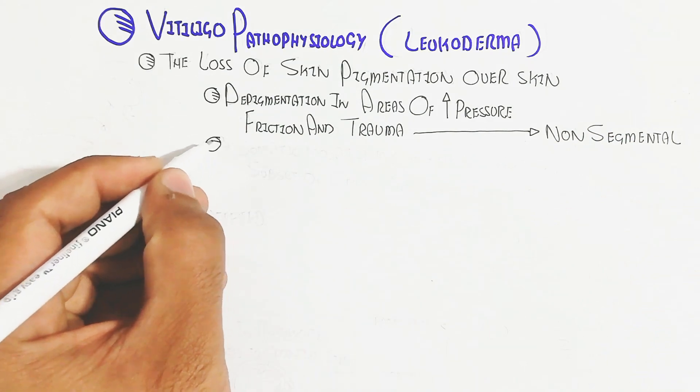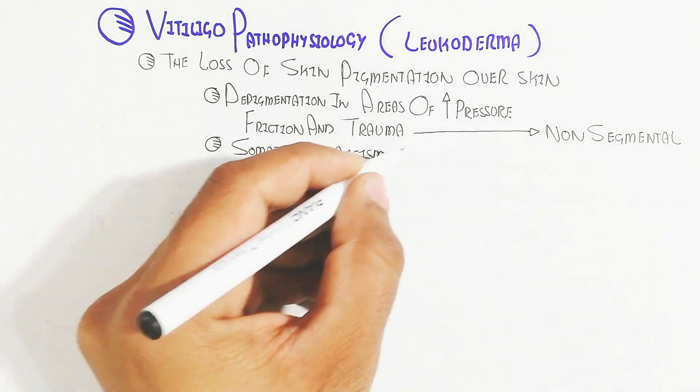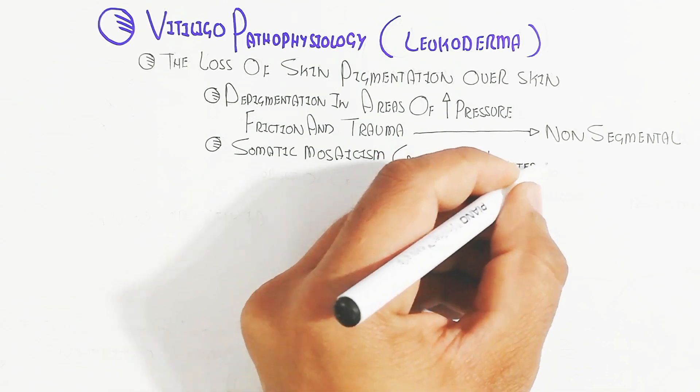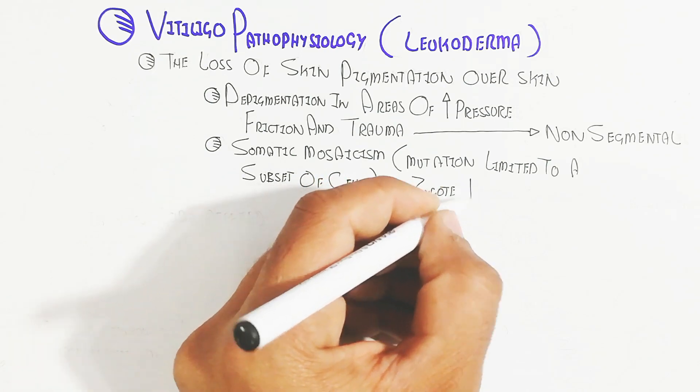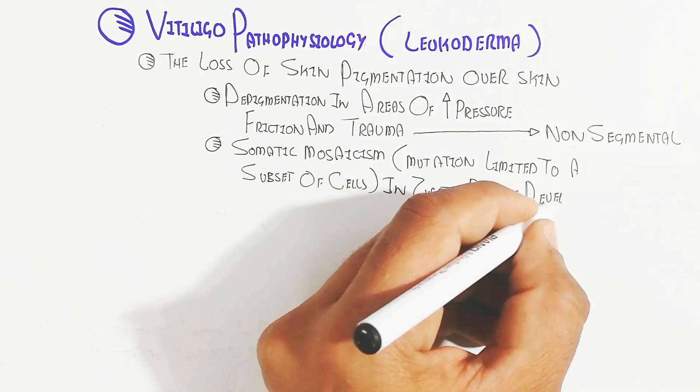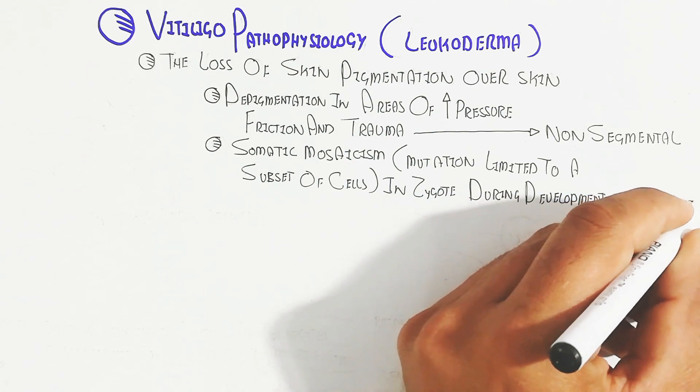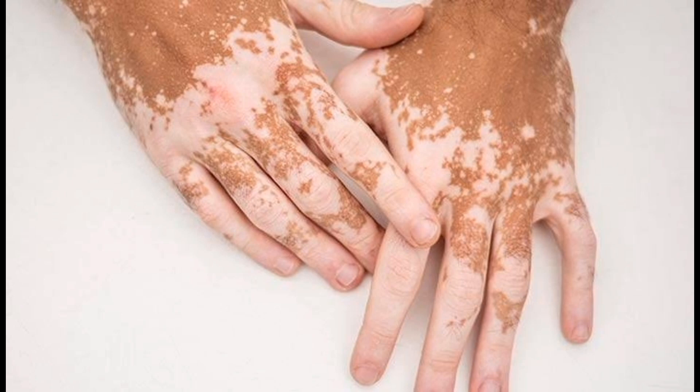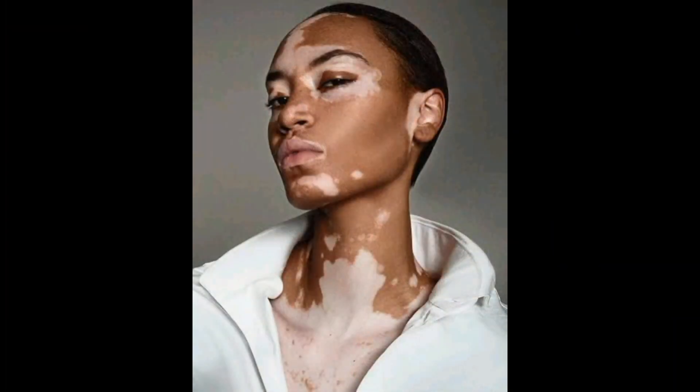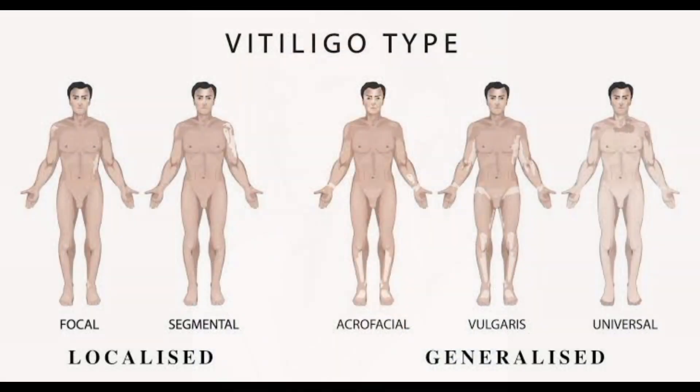This will cause non-segmental vitiligo, while somatic mosaicism, a mutation limited to a subset of cells during zygote development, will cause segmental vitiligo. The types include focal and segmental as localized, while acrofacial, vulgaris, and universal are generalized.